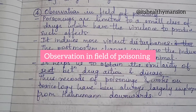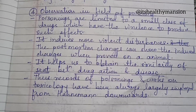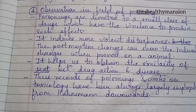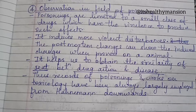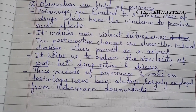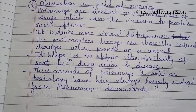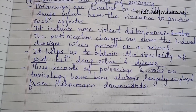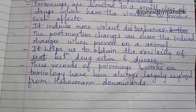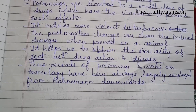Fourth point: Dr. Richard Hughes says that observation in the field of poisoning — poisonings are limited to a small class of drugs which have the virulence to produce such effects. It induces more violent disturbances. The post-mortem changes can show the induced changes when proved on an animal. It helps us to obtain the similarity of seed between drug action and disease. Thus, records of poisonings and works on toxicology have been always largely employed from Hahnemann's time downwards.